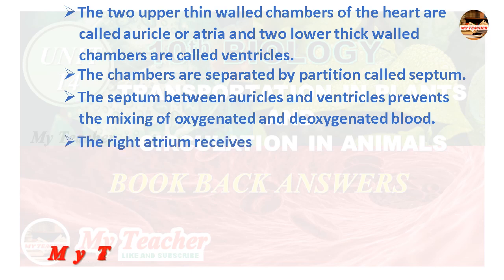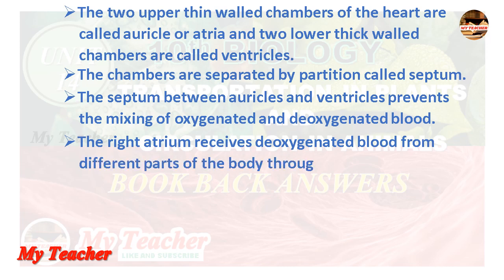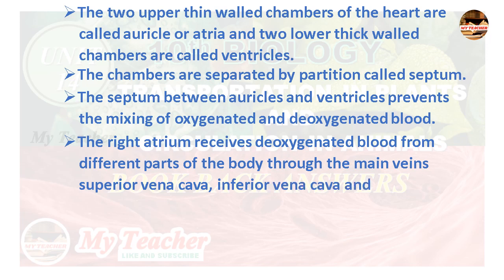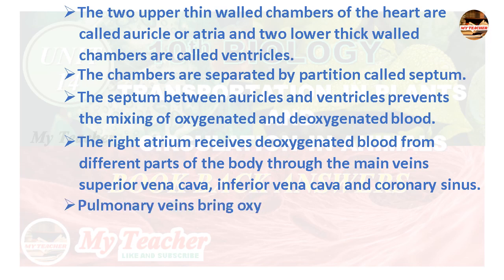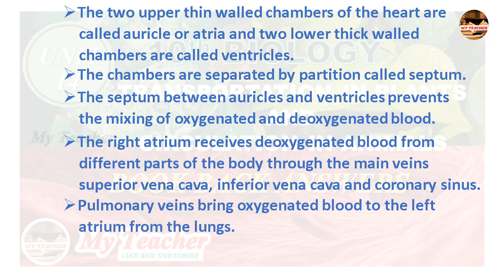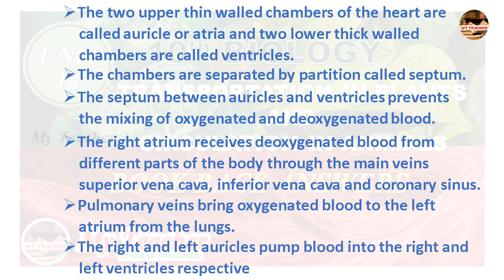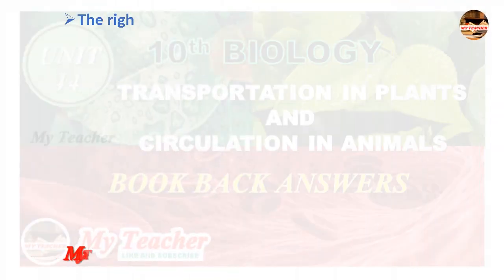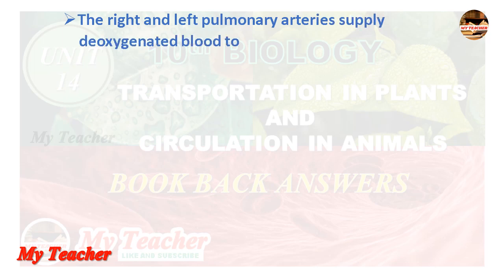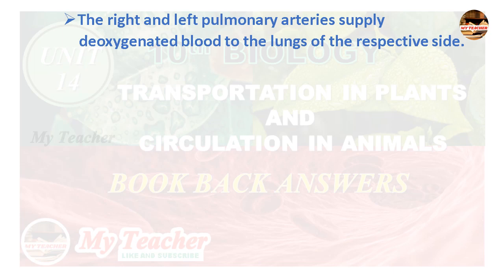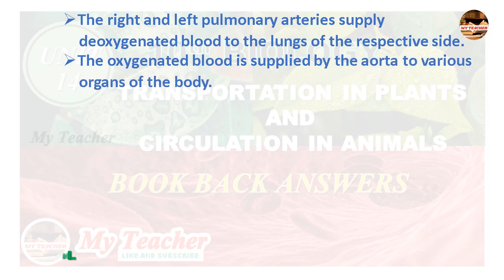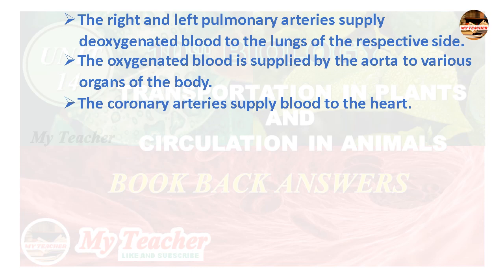The right atrium receives deoxygenated blood from the body through the superior vena cava, inferior vena cava, and coronary sinus. Pulmonary veins bring oxygenated blood to the left atrium from the lungs. The right and left atria pump blood into the right and left ventricles respectively. The right and left pulmonary arteries supply deoxygenated blood to the lungs, while the aorta supplies oxygenated blood to various organs of the body. The coronary arteries supply blood to the heart.